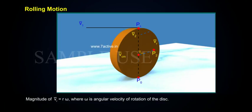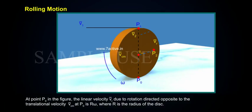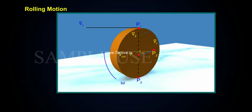The magnitude of VR is equal to r·ω, where ω is the angular velocity of rotation of the disk. At point P₀, the linear velocity VR due to rotation is directed opposite to the translational velocity VCM. At P₀, VR equals r·ω, where r is the radius of the disk.